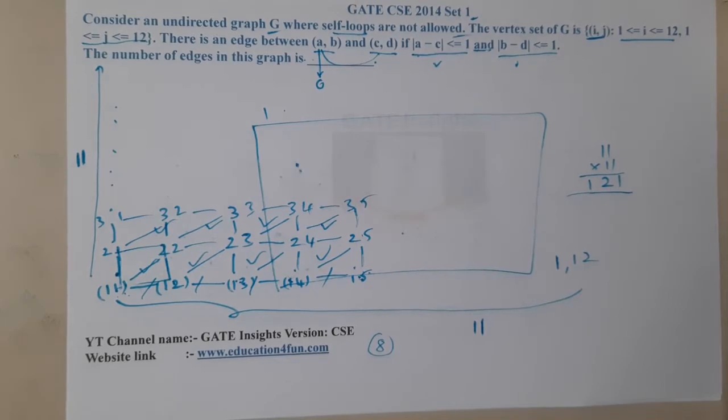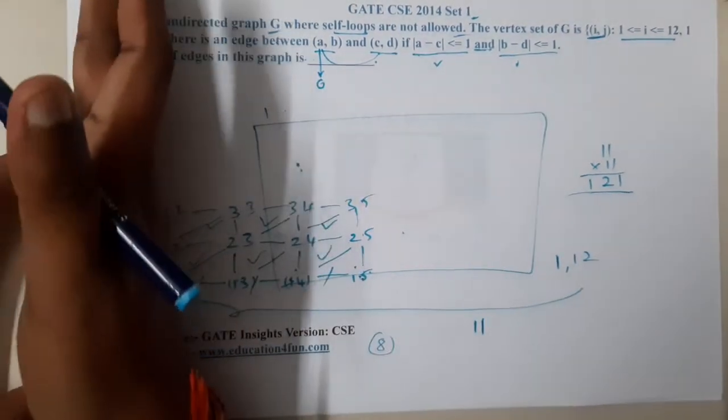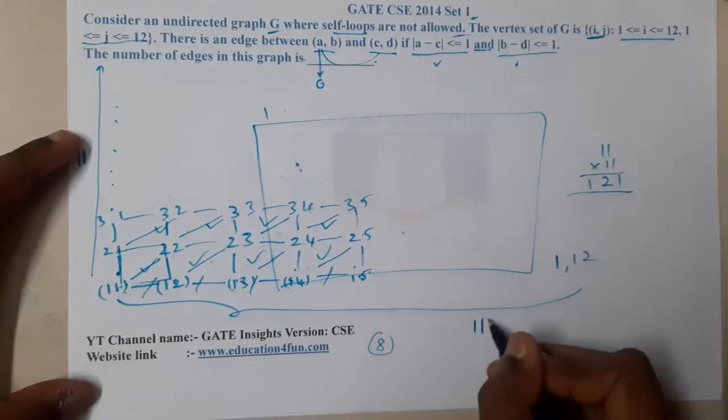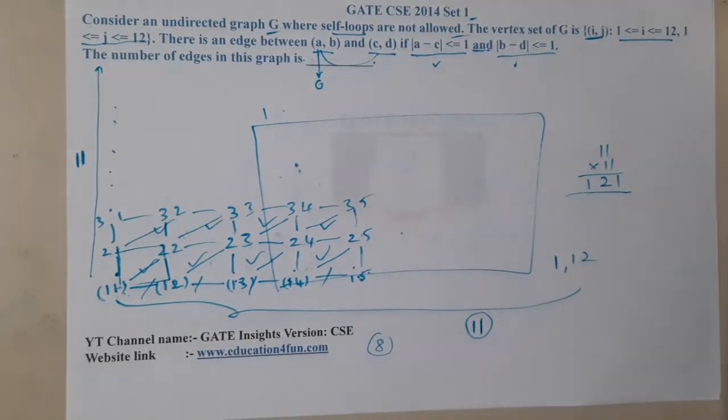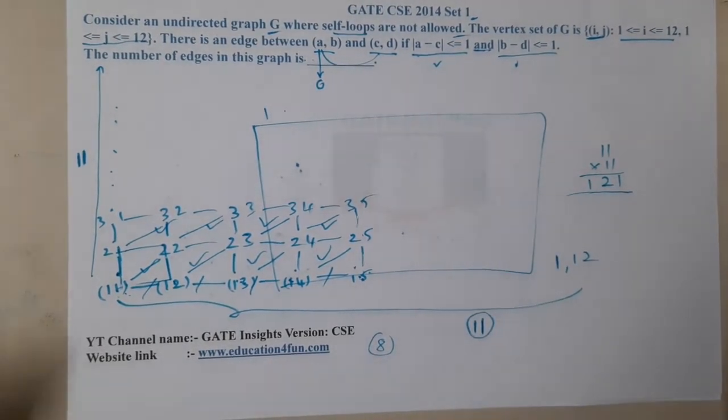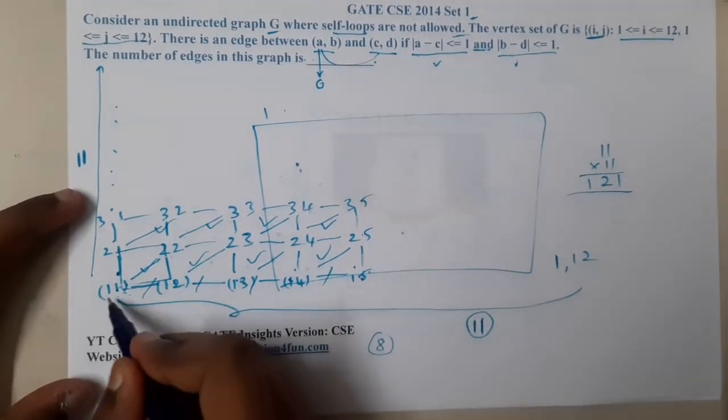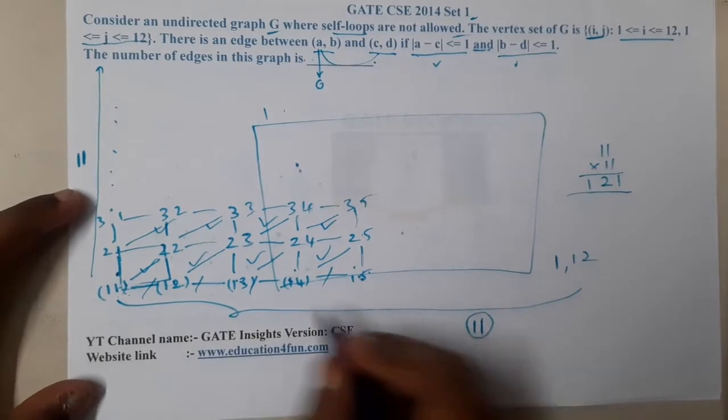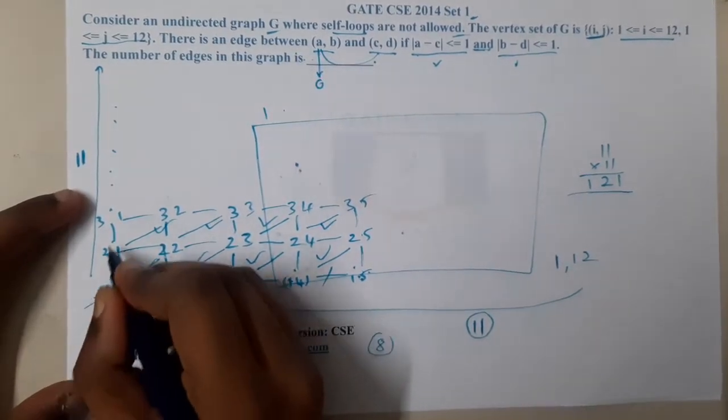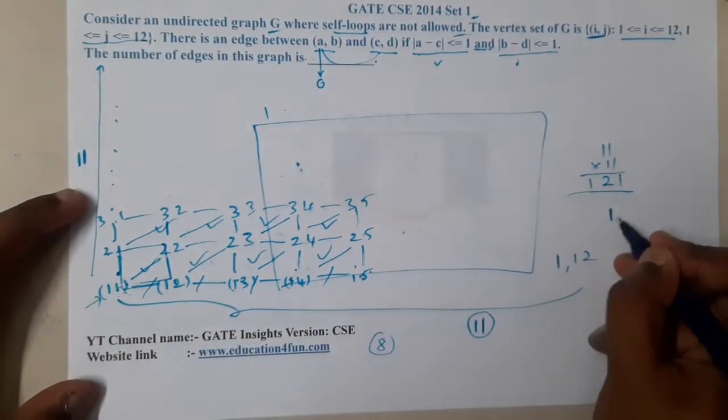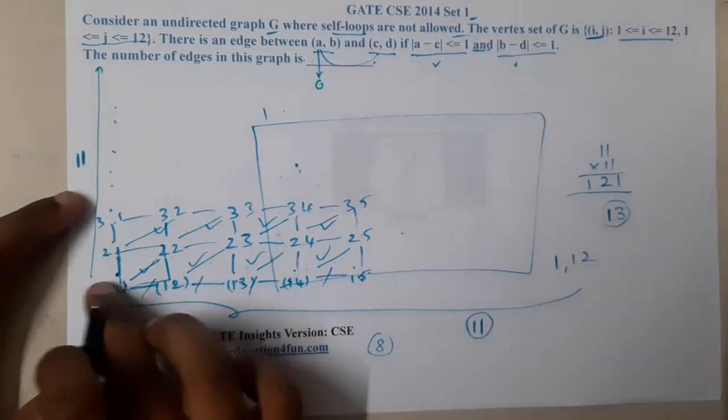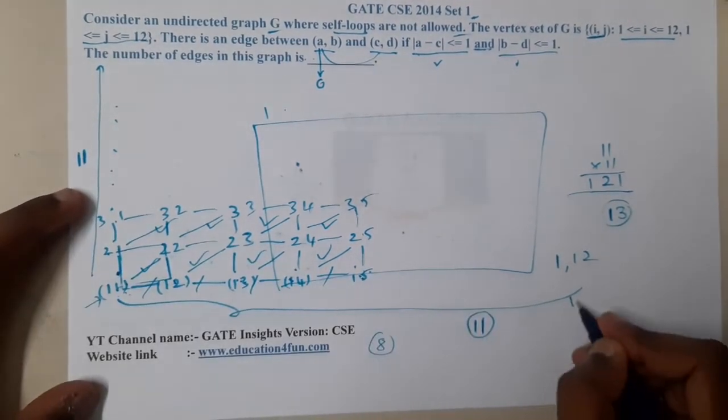In a single line, there will be 11 edges. How many lines are there? There will be the first line, second line, third line, fourth line, up to the 12th line. So basically, there will be a total of 13 lines.